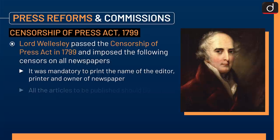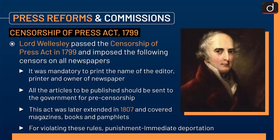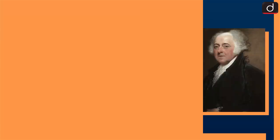Lord Wellesley passed the Censorship of Press Act 1799, imposing the following censors on all newspapers: it was mandatory to print the name of the editor, printer and owner of the newspaper; all articles to be published had to be sent to the government for pre-censorship. This act was later extended in 1807 to cover magazines, books and pamphlets. For violating these rules, punishment was immediate deportation.